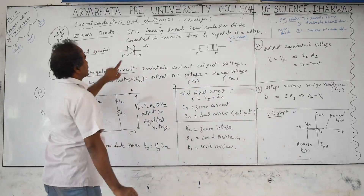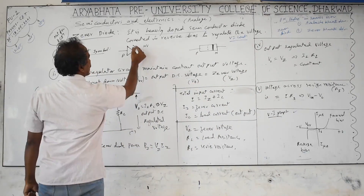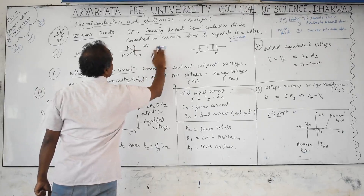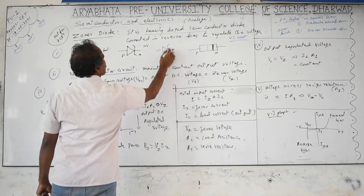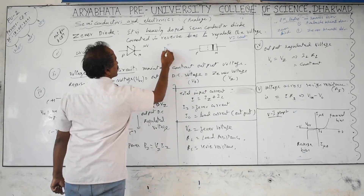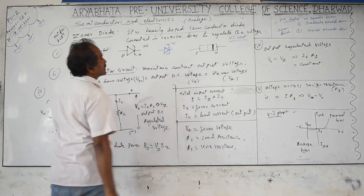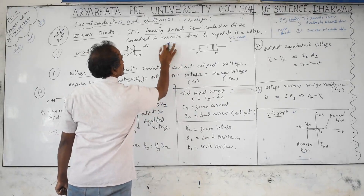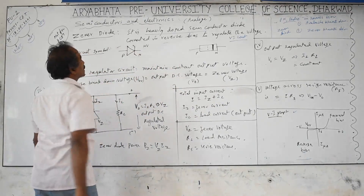The diode symbol is similar to the previous case: the arrow mark indicates the direction of conventional current from P to N. But the line on the negative side is now Z-shaped. Some symbols use a slightly curved or inclined line. Do not confuse it with the tunnel diode symbol — the circuit symbol for a Zener diode is a Z-shape or a slightly curved inclined line.